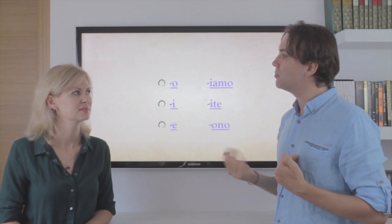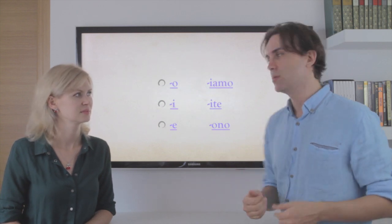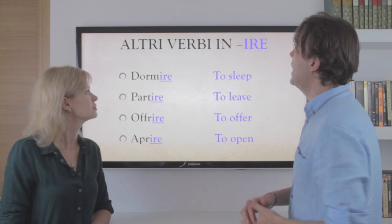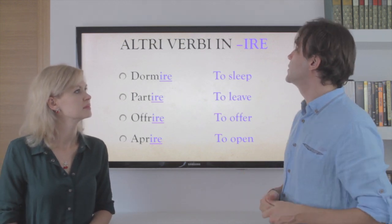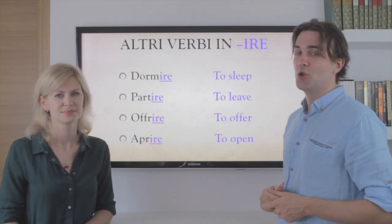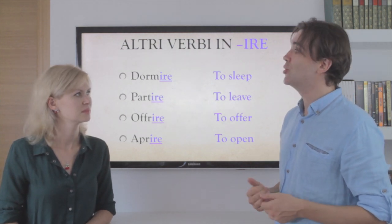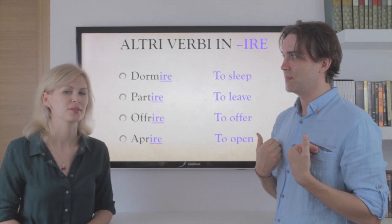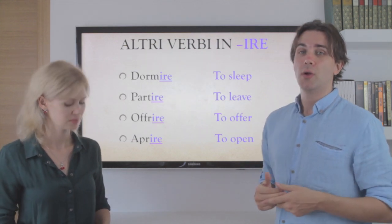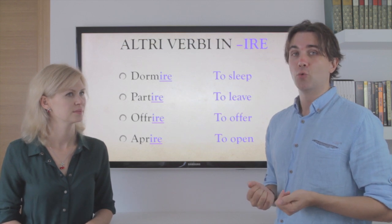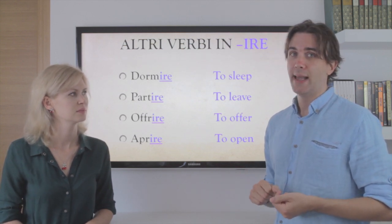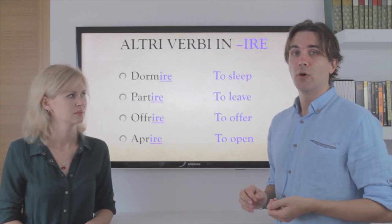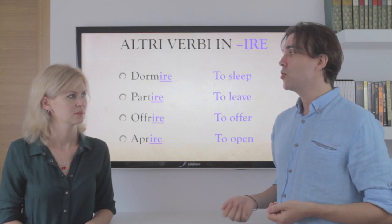Now we'll practice with some main verbs of the third group that we use every day. Altri verbi in -ire. Dormire — dormire is 'to sleep.' Io dormo, tu dormi, lui/lei dorme, noi dormiamo, voi dormite, loro dormono.